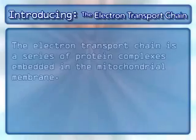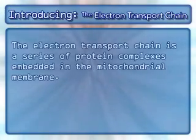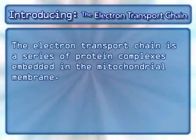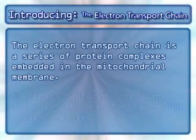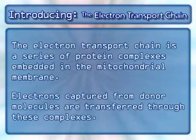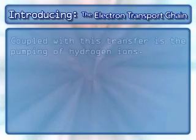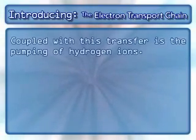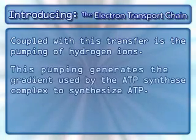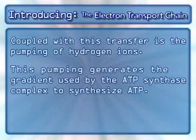The electron transport chain is a series of protein complexes embedded in the mitochondrial membrane. Electrons captured from donor molecules are transferred through these complexes. Coupled with this transfer is the pumping of hydrogen ions, which generates the gradient used by the ATP synthase complex to synthesize ATP.